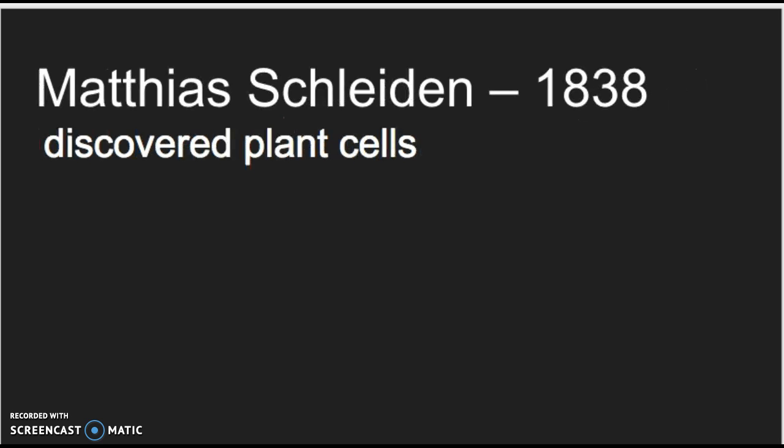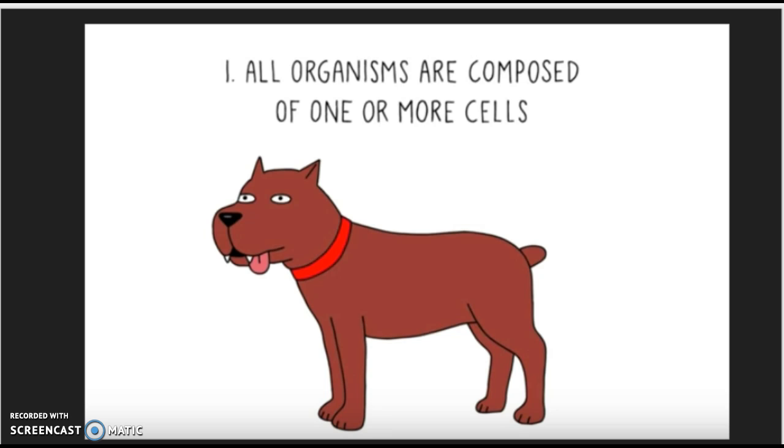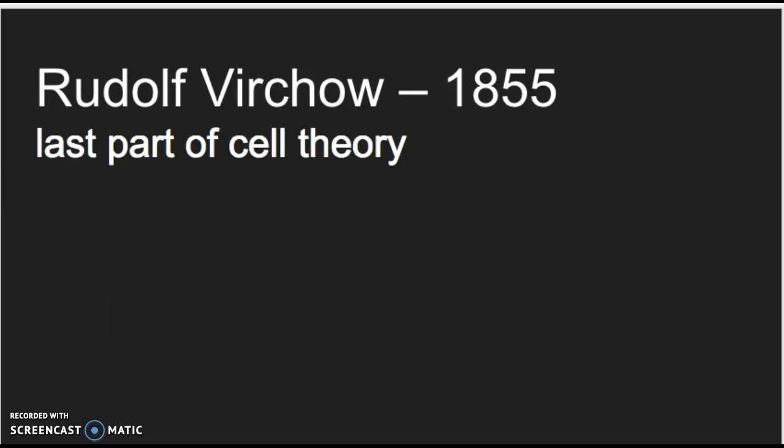Moving on to Matthias Schleiden in 1838, he discovered plant cells. Then a year later, Theodor Schwann discovered animal cells and wrote the first two parts of the cell theory: that all organisms are composed of one or more cells, and the cell is the basic unit of life.